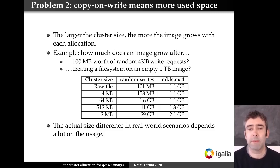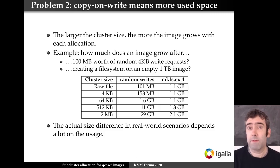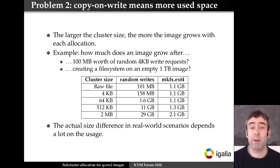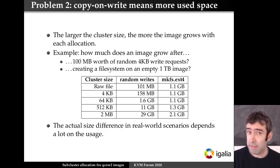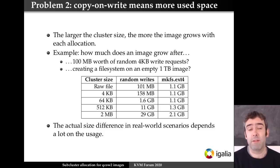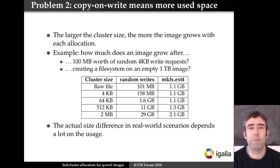I was doing a couple of tests for this presentation. If we have an empty image and write 100 megabytes worth of random 4k requests, the impact of a larger cluster size is very big. With the default 64k, we get a 1.6 gigabyte image — more than 10 times what we were trying to write. But if we go to the maximum cluster size, we get 29 gigabytes, which is 300 times the amount of data we wanted to write. Of course, this is an extreme case — normally in a real-world scenario we don't just write random requests — but it gives an idea of what the problem is.